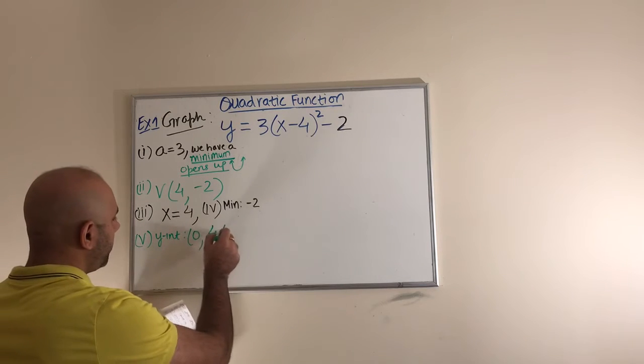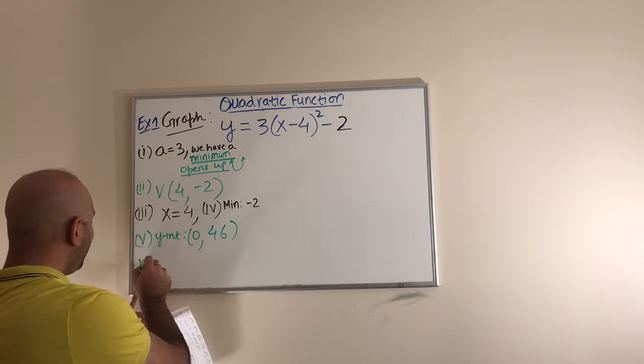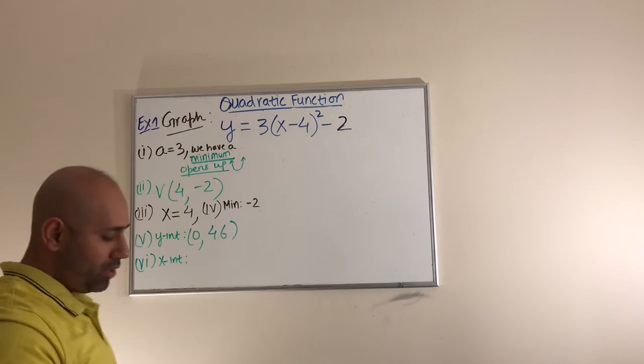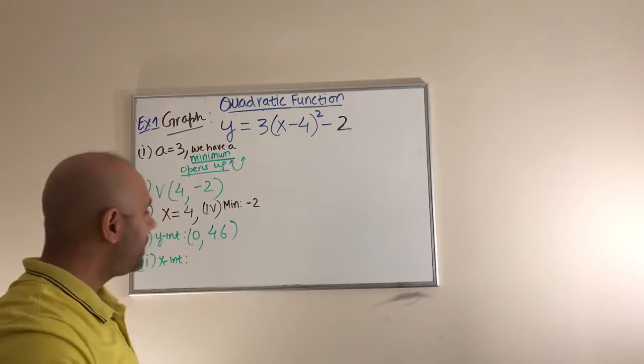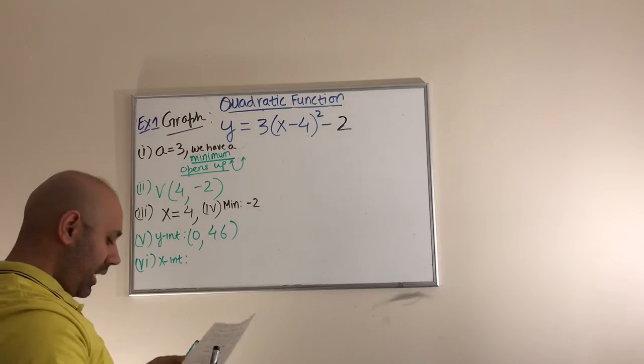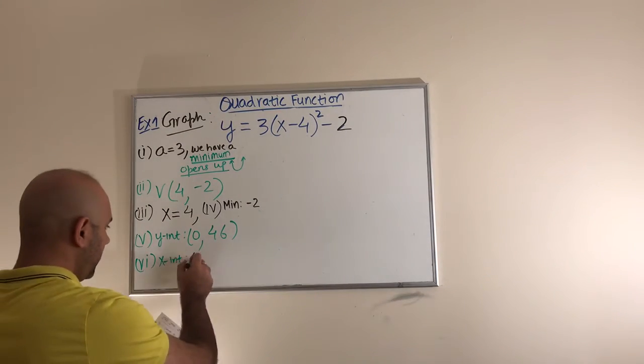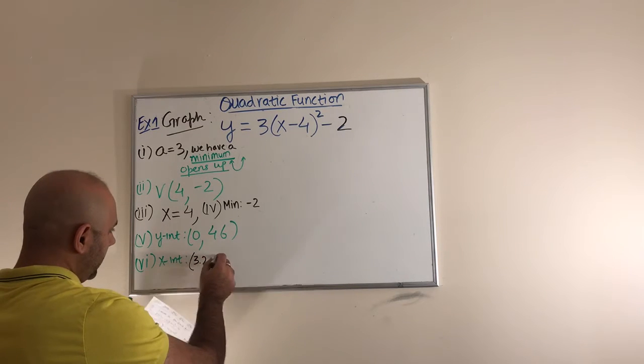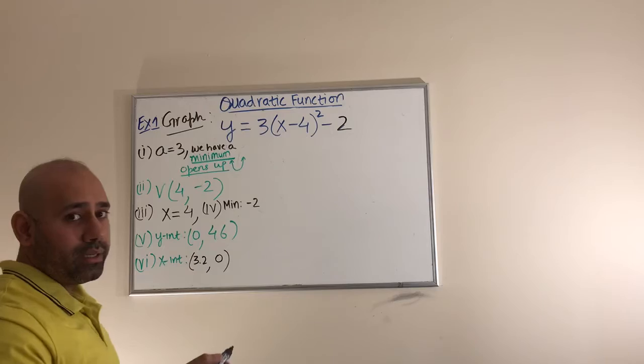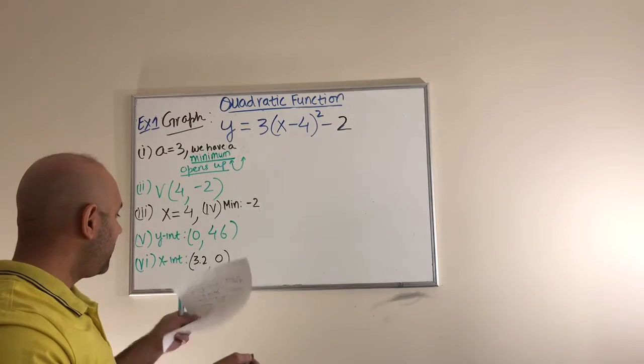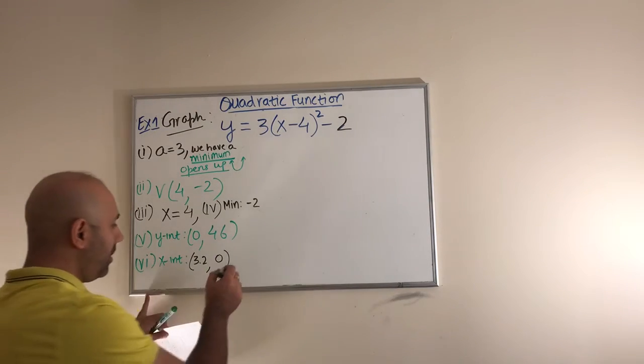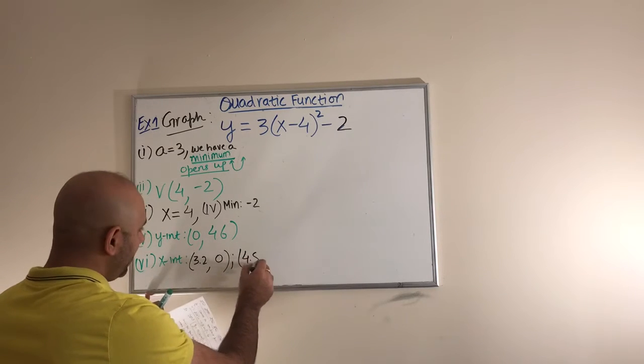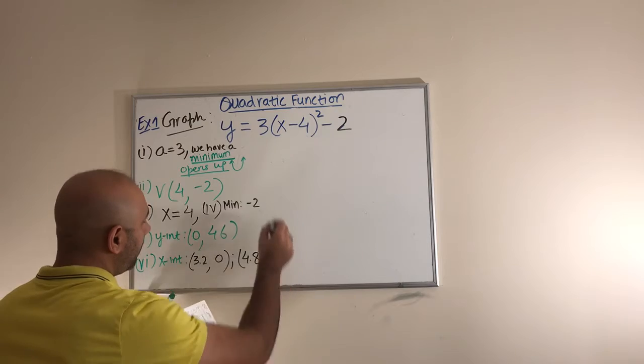And then finally the last one was the x-intercept. The x-intercepts, we had actually two x-intercepts. And in this case we got a decimal so we got to work with the decimal. So it was 3.2 and 0 as a coordinate. Here we have to write it as x first and y is going to be obviously 0. And the other one was, what was it, 4.8 and 0. Okay.